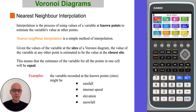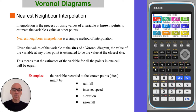Given the values of the variable at the sites of a Voronoi diagram, the value of the variable at any other point is estimated to be the value at the closest site. This means that the estimates of the variable for all the points in one cell will be equal. The variable recorded at the sites might be rainfall, internet speed, elevation or snowfall, for example.